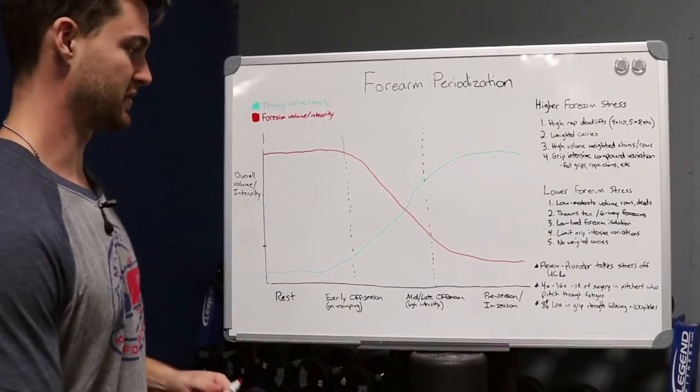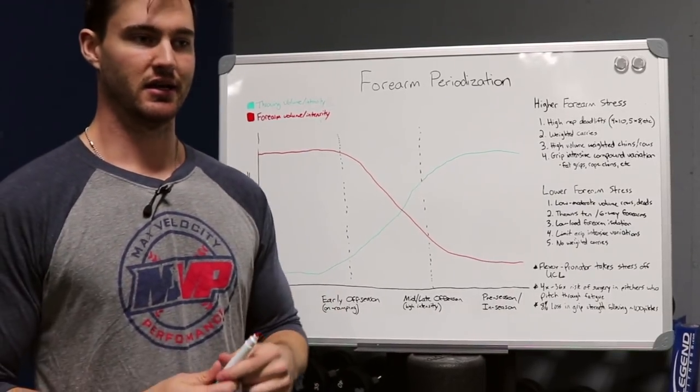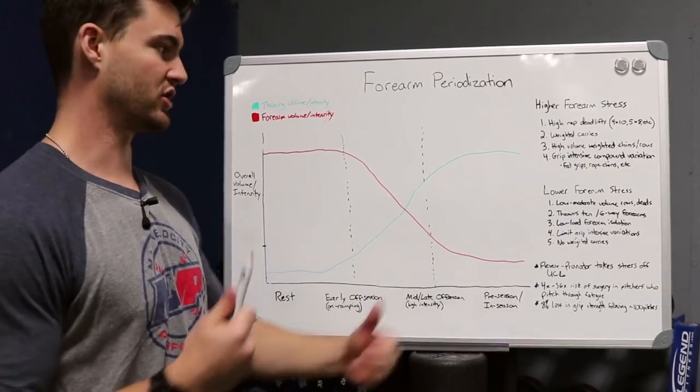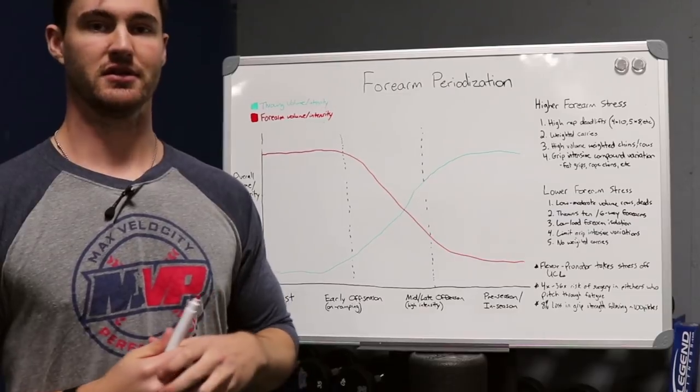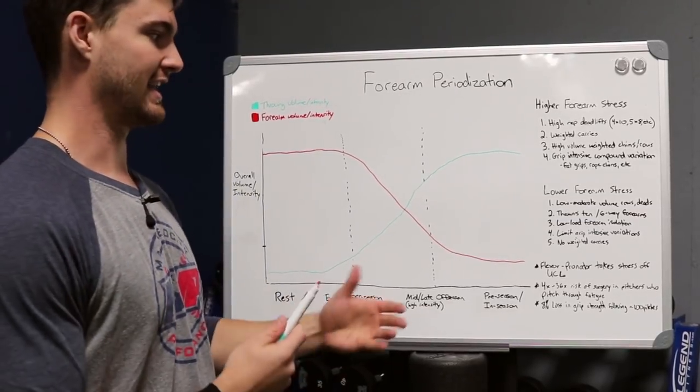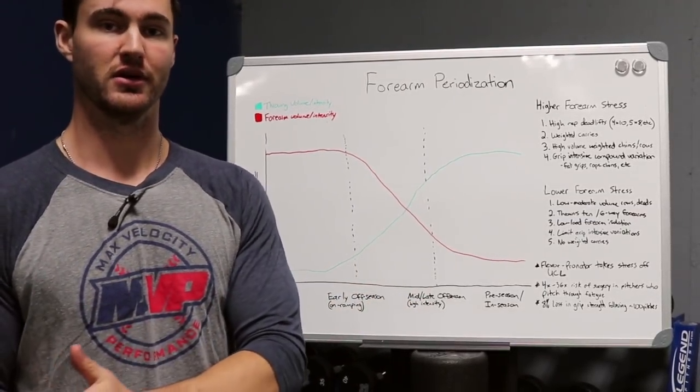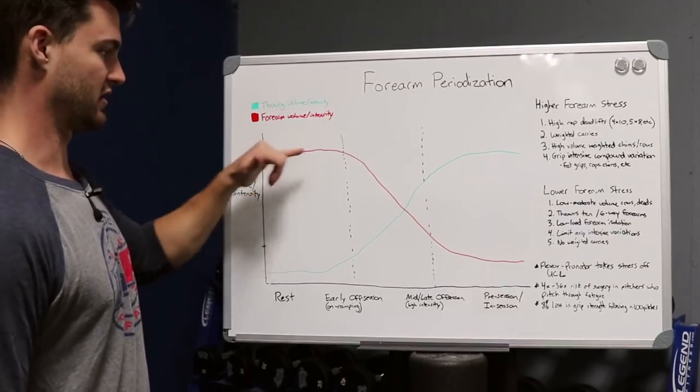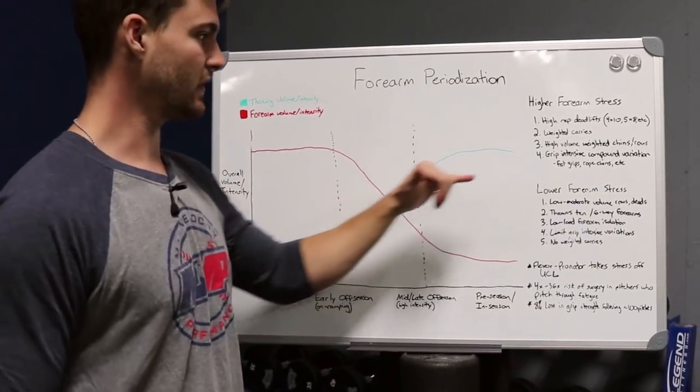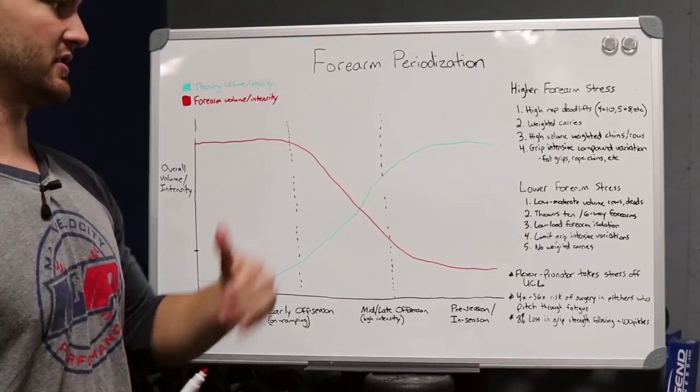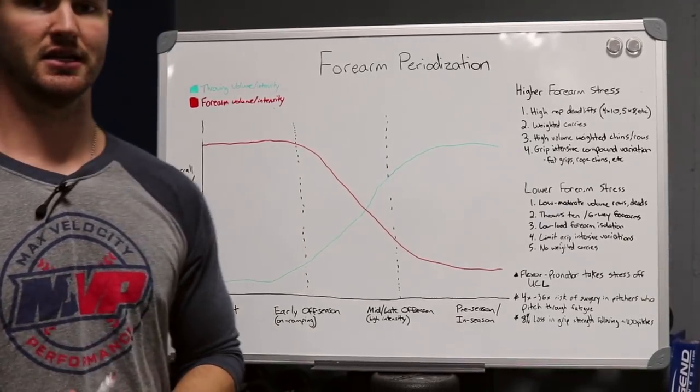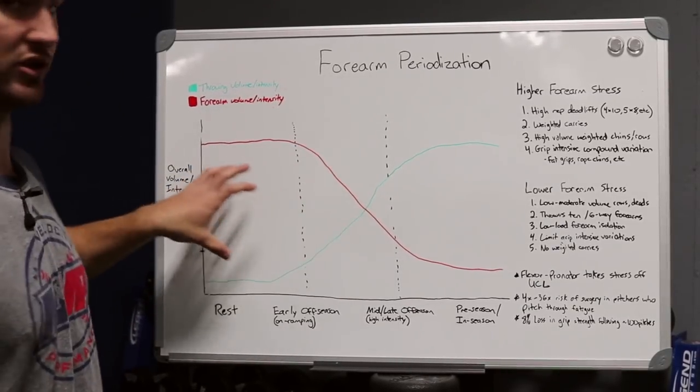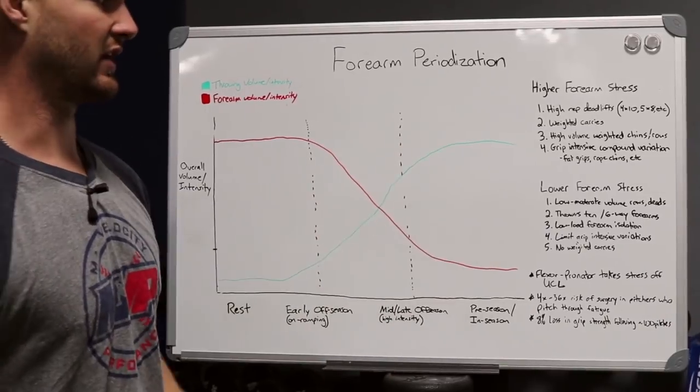Weighted carries, that's one of the biggest offenders when it comes to a lot of coaches don't necessarily think about the effect that farmers walk competitions or weighted chin-ups or any sort of competition that involves forearm intensive training has on the athletes and their ability to recover. So that's going to be a big one. Weighted carries, really want to limit those to early off-season rest periods of throwing. High volume weighted chins slash rows. This is again, four by tens, three by twelves, five by eights, anything that's going to really be frying out your forearms is something you're going to want to save for earlier in the off-season or during these rest periods.